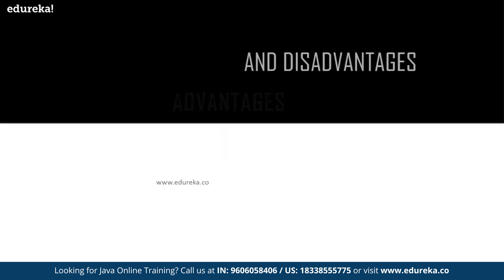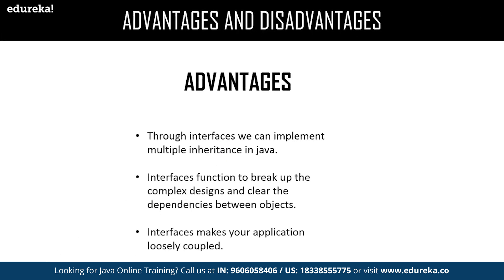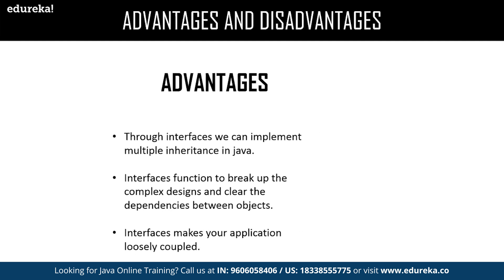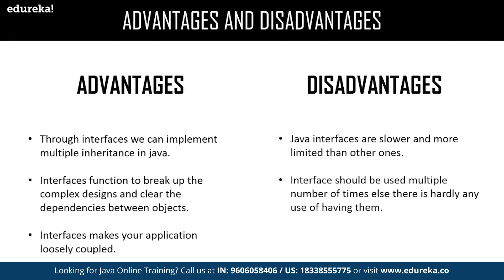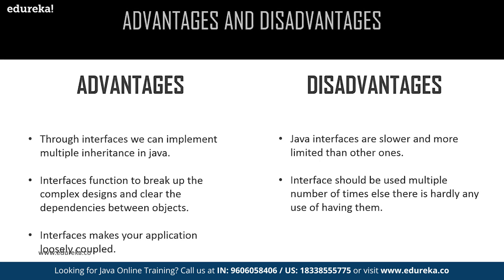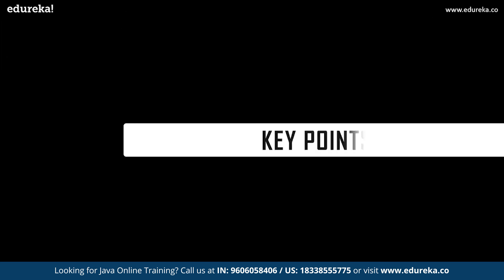Let us get into the major advantages and disadvantages of interface. Advantages: we can achieve multiple inheritance in Java, easily break up complexity and enable clear dependency between objects, and achieve loosely coupled applications. Interfaces also have disadvantages: Java interfaces make the application slower compared to competitors like Python which support multiple inheritance natively. Also, once an interface is included in an application, it might be used sparingly or end up being used multiple times at a larger scale.